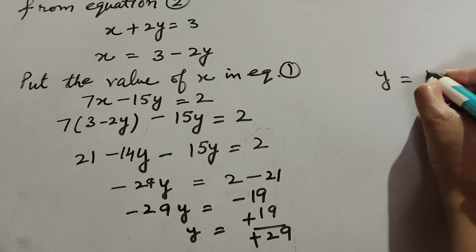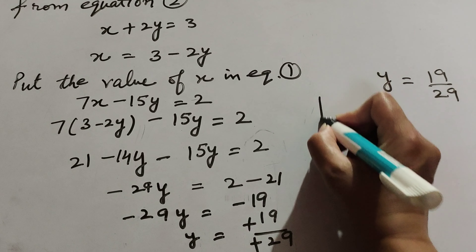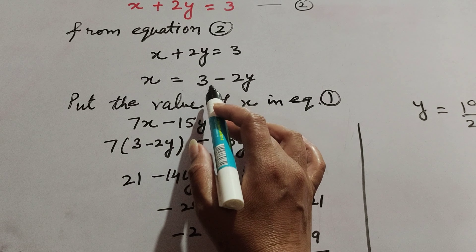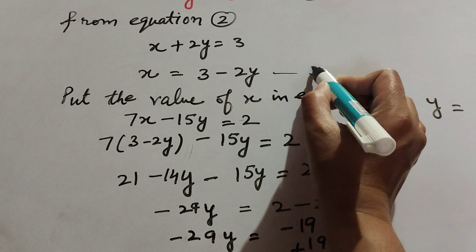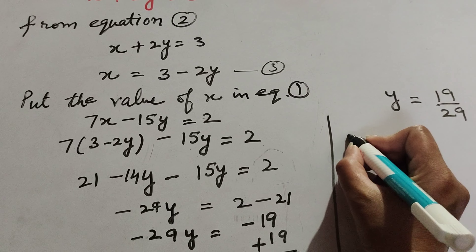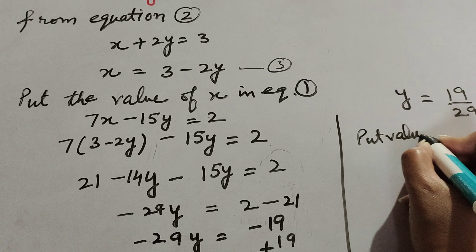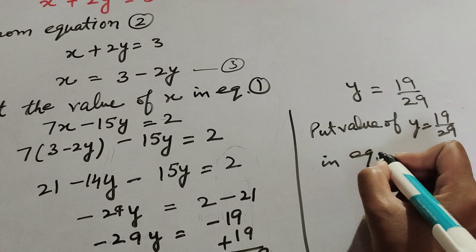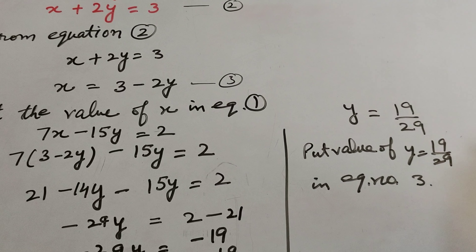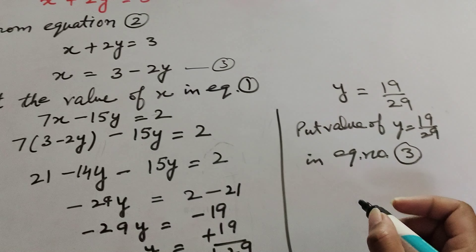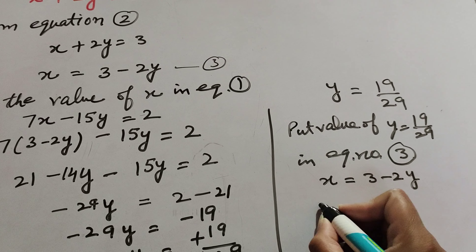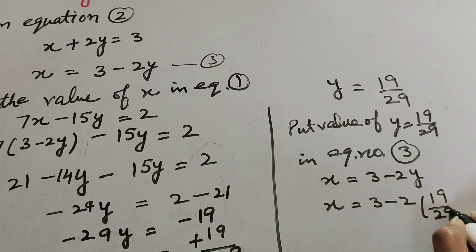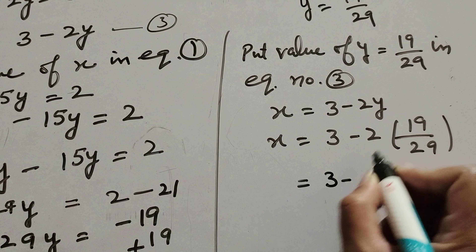Now we put the value of y in equation number 3, which is x = 3 - 2y. We put the value y = 19/29 into equation number 3. So x = 3 - 2 × (19/29).